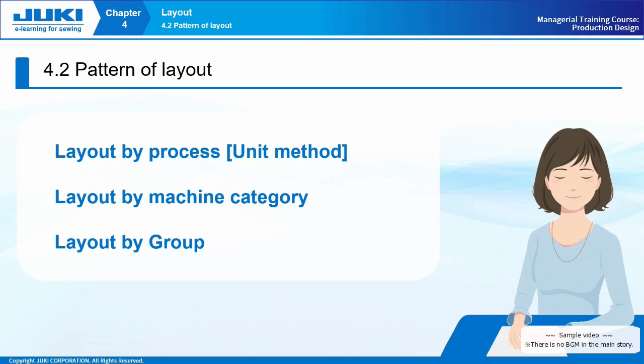4-2 Pattern of Layout. In the previous section, we learned that the layout is the embodiment of the result of process distribution, and that the arrangement and number of equipment will differ depending on the way work is distributed and the production conditions of each factory. Since it is necessary to determine what type of equipment layout is appropriate based on the conditions of your factory, study the three basic layout patterns introduced in this section and use them as a reference when considering the layout.